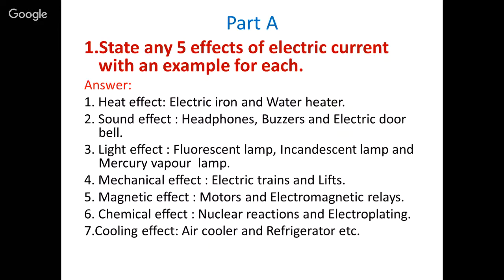Part A, first question: state any five effects of electric current with an example for each. Each effect carries one mark. For example, heat effect — example: electric iron or water heater. Sound effect — headphone, buzzer, electric doorbell. Light effect — fluorescent lamp, incandescent lamp, mercury vapour lamp. Mechanical effect — electric train and lift. Magnetic effect — motors and electromagnetic relays. Chemical effect — nuclear reaction and electroplating. Cooling effect — air cooler and refrigerator. Answer any five with one example each.